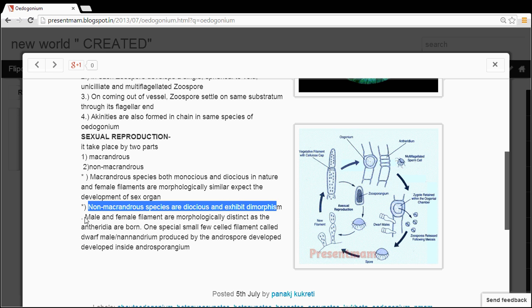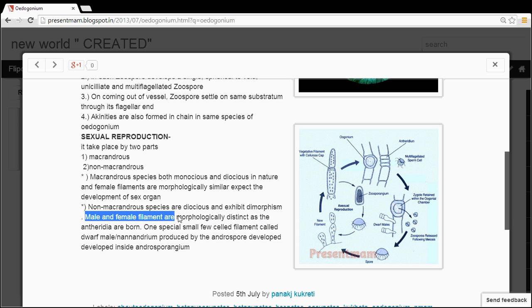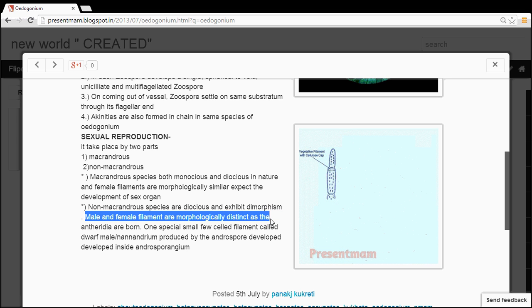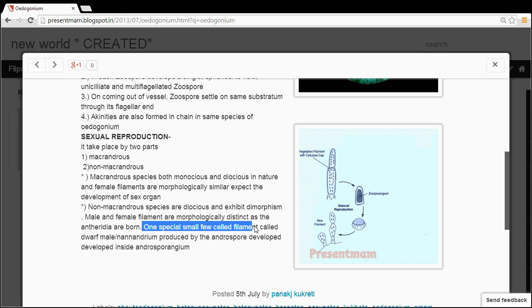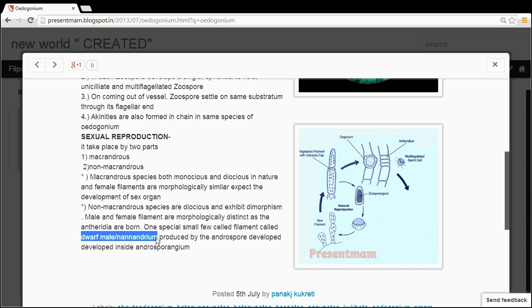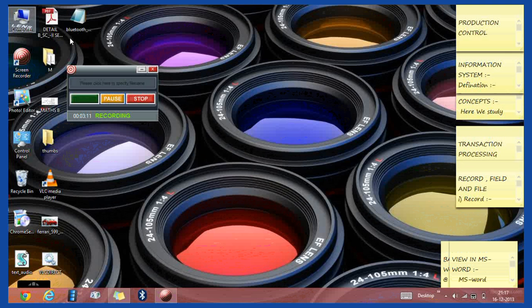The antheridia are borne on special few-celled filaments called dwarf males or nannandrium, which are produced by androspores which develop inside androspores. That's all about Oedogonium.